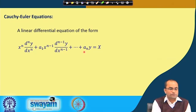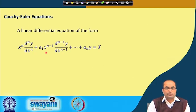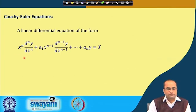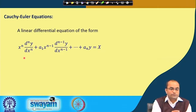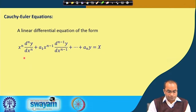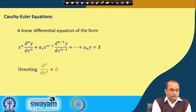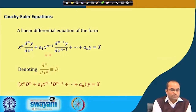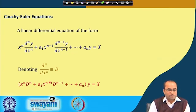Here a₁, a₂, aₙ are constants, but together with them we have x^n, x^(n-1), x^(n-2) and so on. We will look into how to solve such equations when we have non-constants as the coefficients of these derivative terms. Denoting the nth derivative using operator D, we can write down this equation in the form x^n D^n, then a₁ x^(n-1) and operator D^(n-1) operated on y equals x.